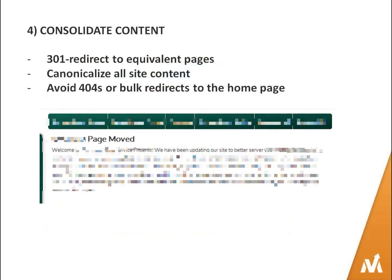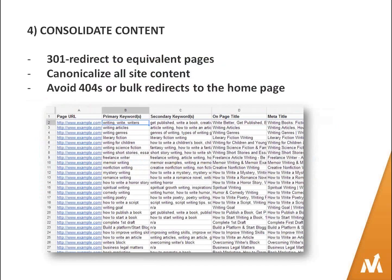Canonicalize all site content — every page needs its own identity. Avoid 404s if you can; a 301 redirect is what I always rely on. Don't just send everything to the home page. All of this is much easier when you have a keyword map. This spreadsheet should be comprehensive and shared across your whole organization — whether it's just you or a team of 50. I use Google Docs or Google Sheets so everyone can access it simultaneously, including the IT department for planning 301 redirects.